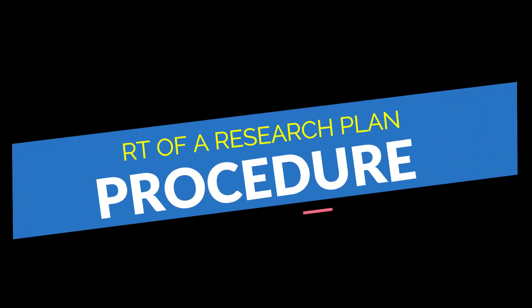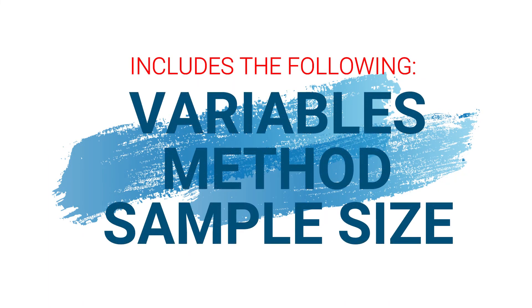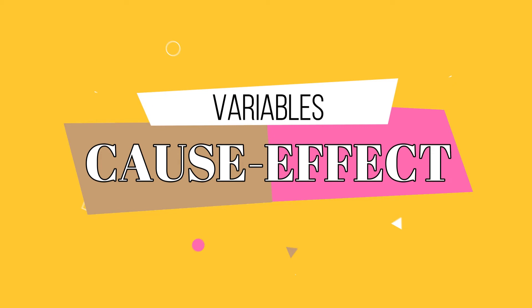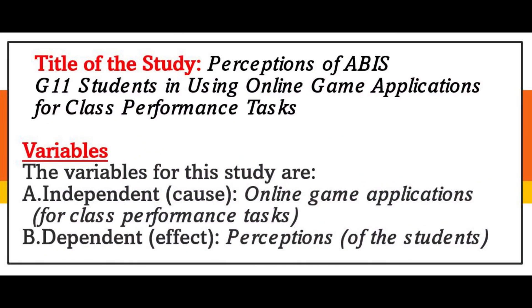The next part is procedure. At this part of the research plan, you have to list the research variables, the method you are going to use, and give a little explanation of the sample size. When we say variables, it shows the cause and effect of your study. Utilizing the example research, the variables would be the independent and the dependent variables. The independent variable is the online game applications for class performance tasks, because it is the cause or reason why the researcher wants to get the perceptions of students. The dependent variable is the effect of the independent variable.